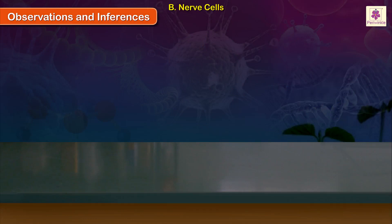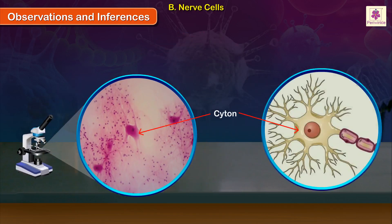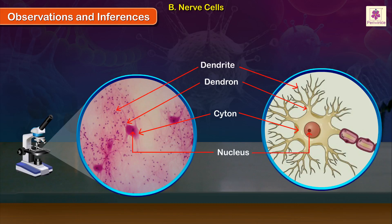Nerve cells: A nerve cell is also called a neuron. It has a large body called a cytone. A cytone gives out many cytoplasmic branches called dendrons, and each dendron gives out many thin fiber-like branches called dendrites. A prominent nucleus is present in the cytone, usually at its center.